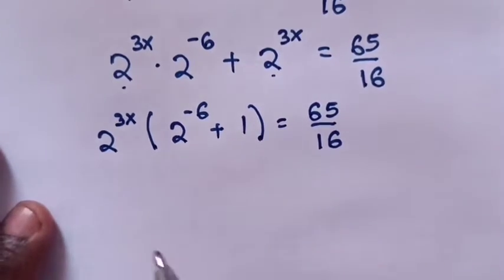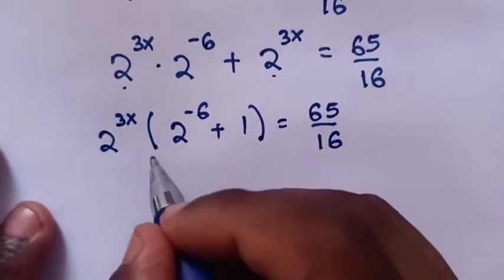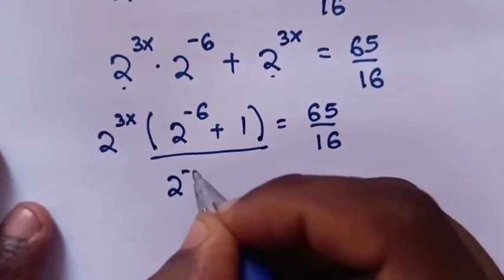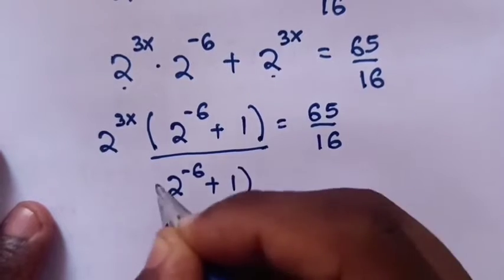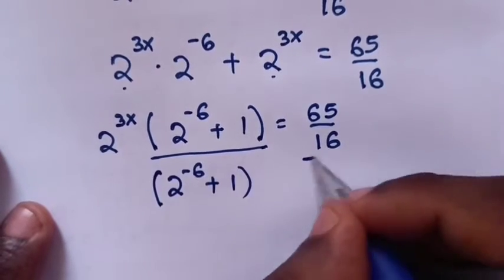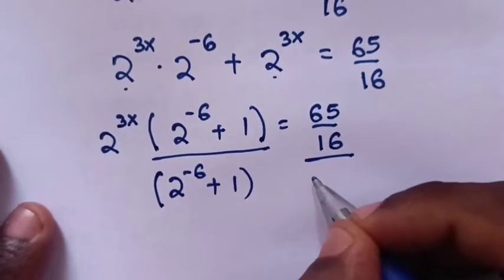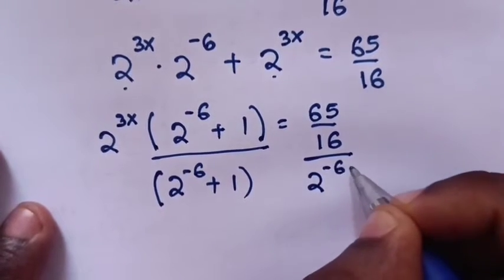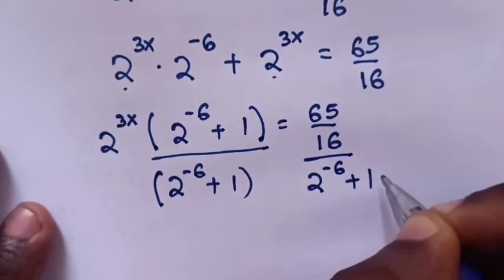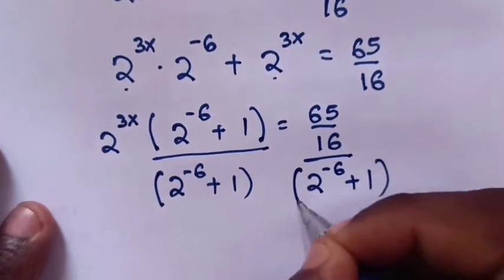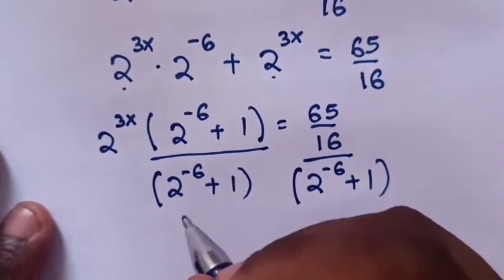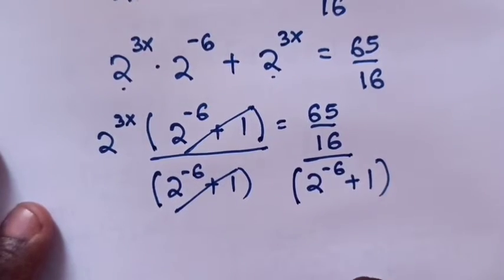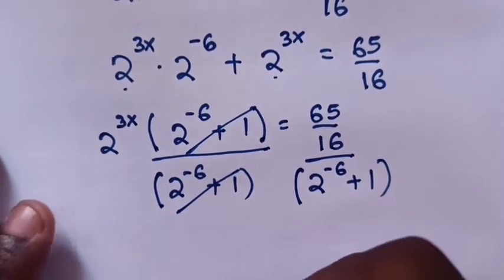Then we divide both sides by (2^(-6) + 1), which cancels to 1 on the left side.